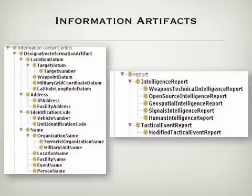Information artifacts are the sorts of things that can be about — in other words, can stand in the relation of aboutness to other entities. They describe, annotate, designate, enumerate, express, and relate entities and events.